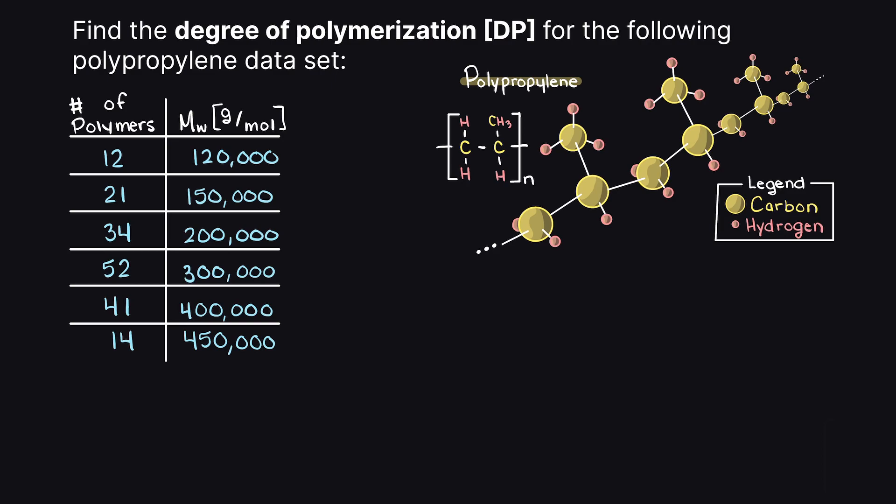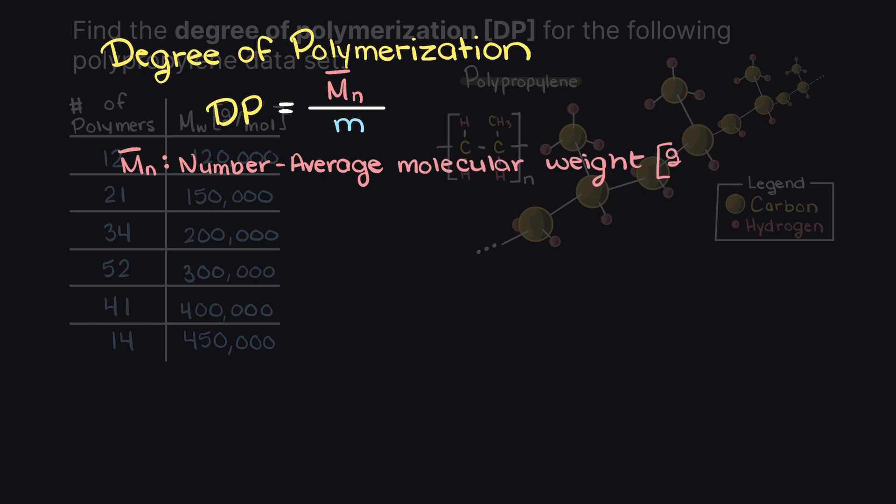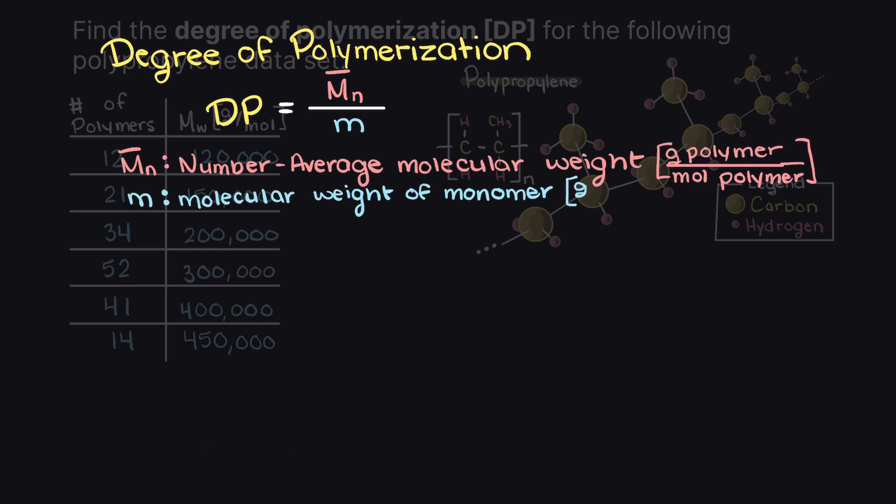Briefly, let's review what degree of polymerization of a given polymer is. The degree of polymerization is essentially just the average number of repeating units in a polymer, so the number of monomers connected together in a given polymer from our sample. To determine the degree of polymerization, it is the number average molecular weight over the molecular weight of our repeating unit.